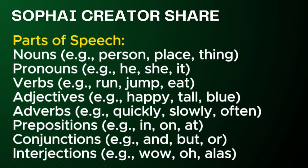Parts of speech: Nouns — for example, person, place, thing. Pronouns — for example, he, she. Verbs — for example, run, jump. Adjectives — for example, happy, tall, blue. Adverbs — for example, quickly, slowly, often.